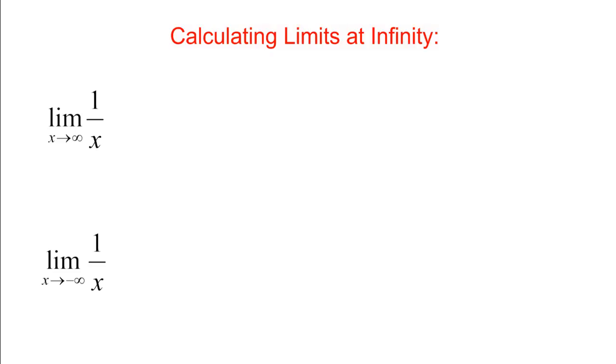If we're given the limit as X goes to infinity of 1 over X, how would we figure that out? If X gets bigger and bigger and bigger, what happens to 1 over X?